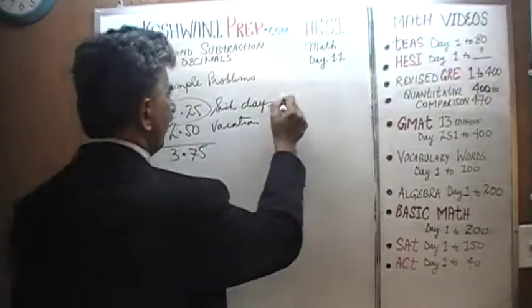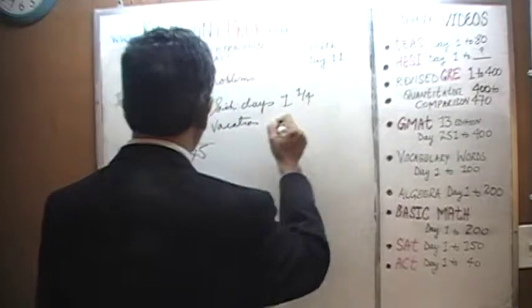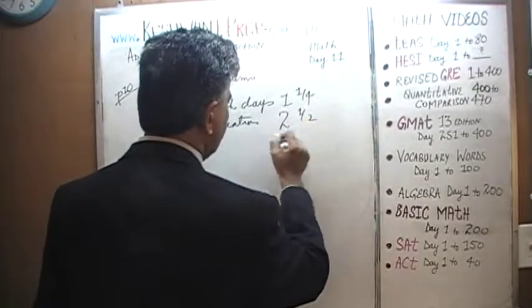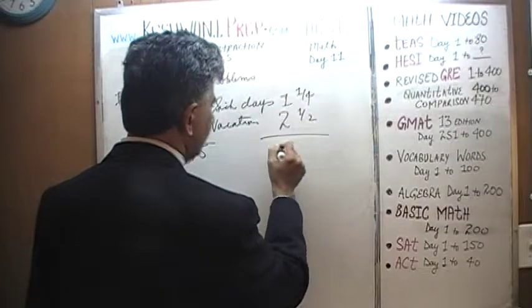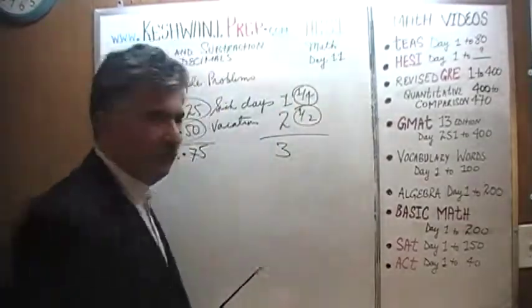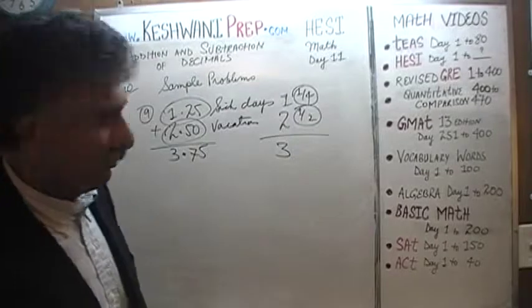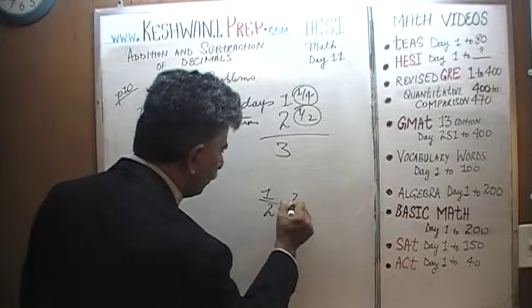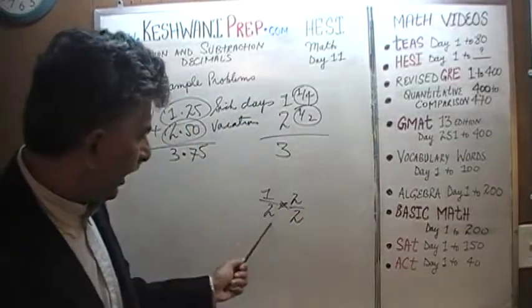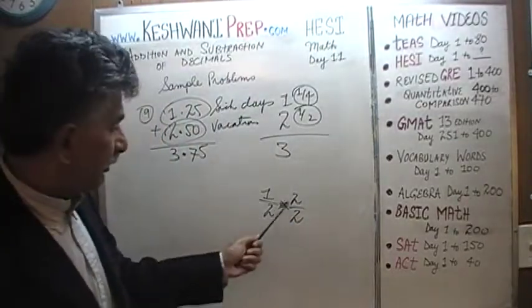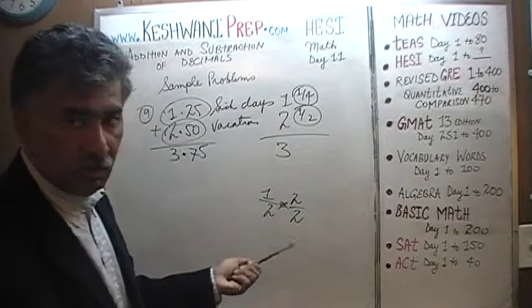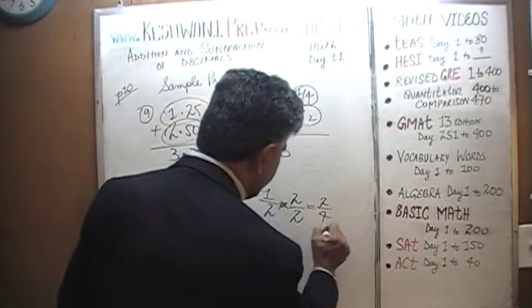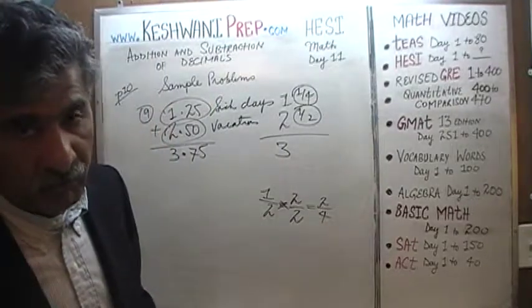0.5 plus 0 is just going to be 5. 2 plus 5 is 7. And 1 plus 2 is 3. Or we could have realized that 1.25 is 1 and a quarter, and 2 and a half. Half is simply 2 quarters. If you multiply top and bottom by 2, we get 2 over 4, which is 2 quarters, which makes perfect sense. Obviously 2 quarters make a half.